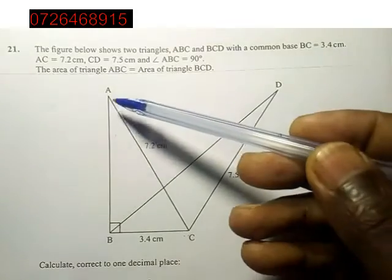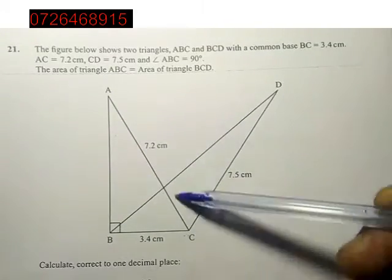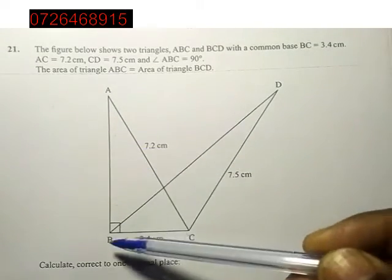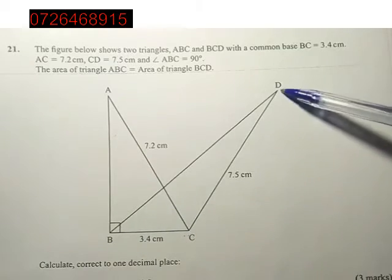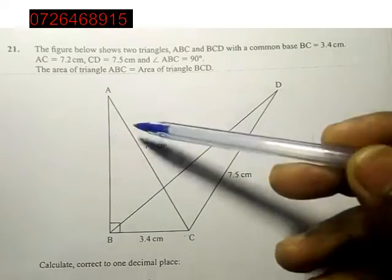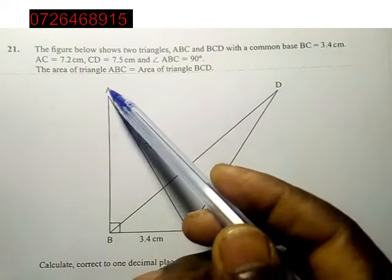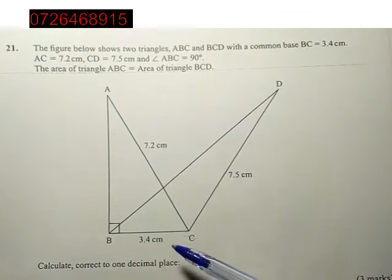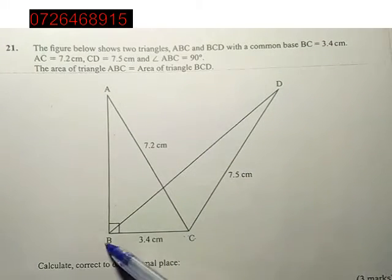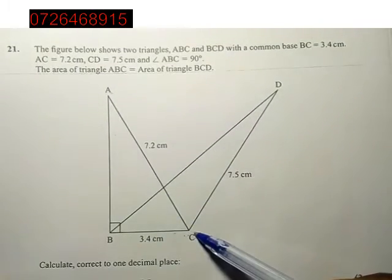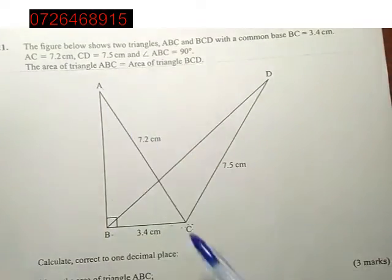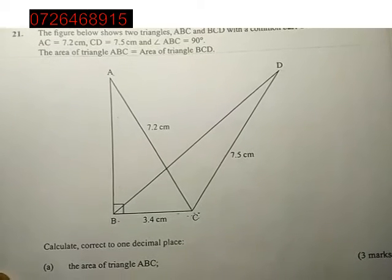Area of ABC equals the area of BCD. We have two triangles with equal areas. Triangle ABC is a right angle triangle. We have AC, we have the hypotenuse, we have the base, now we can get the height using Pythagoras theorem.